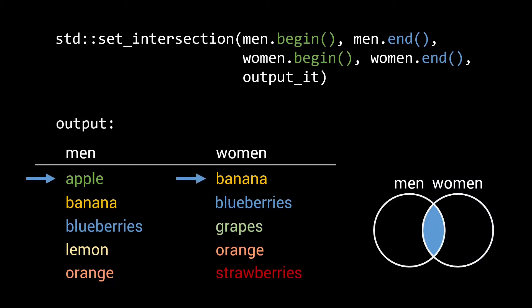The set-intersection algorithm finds the elements that are in both sets and writes them to the output iterator. It does this in order, and as such the output will also be sorted and hence ready to use with more set operations.